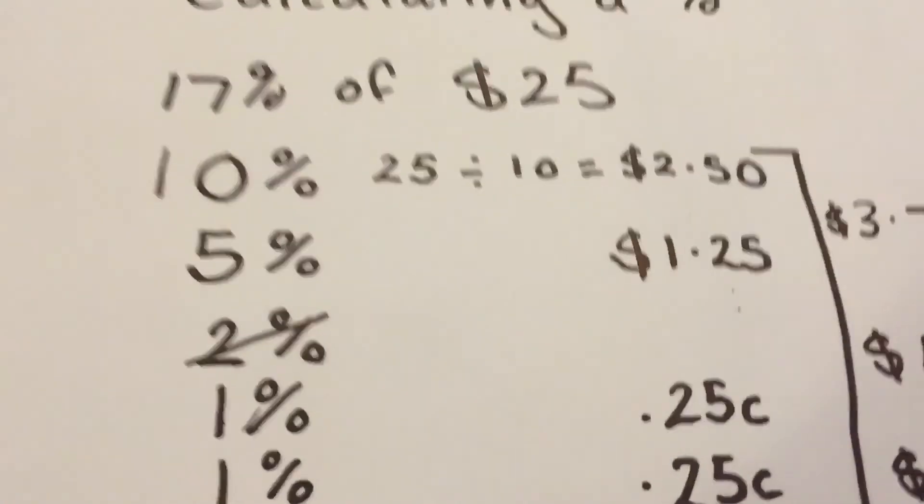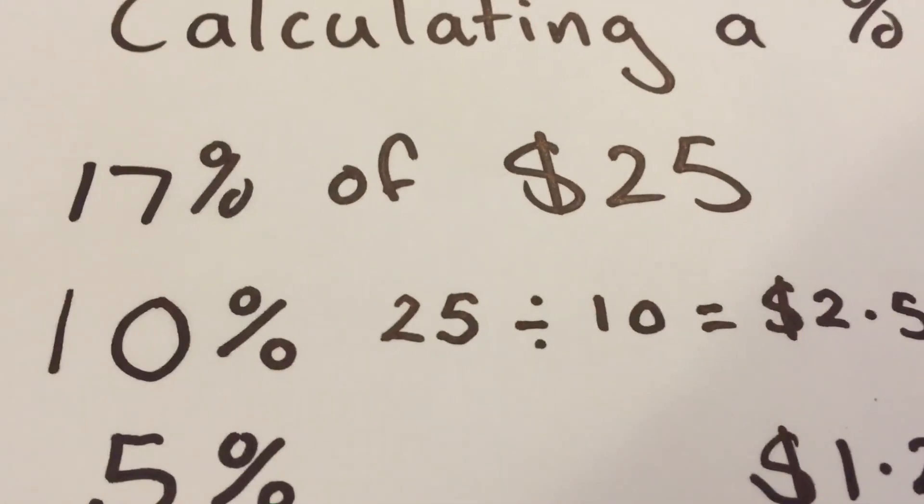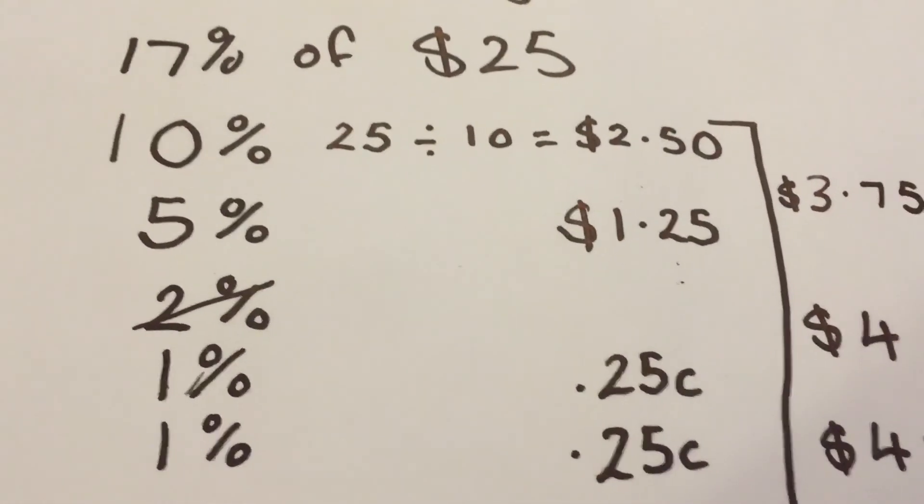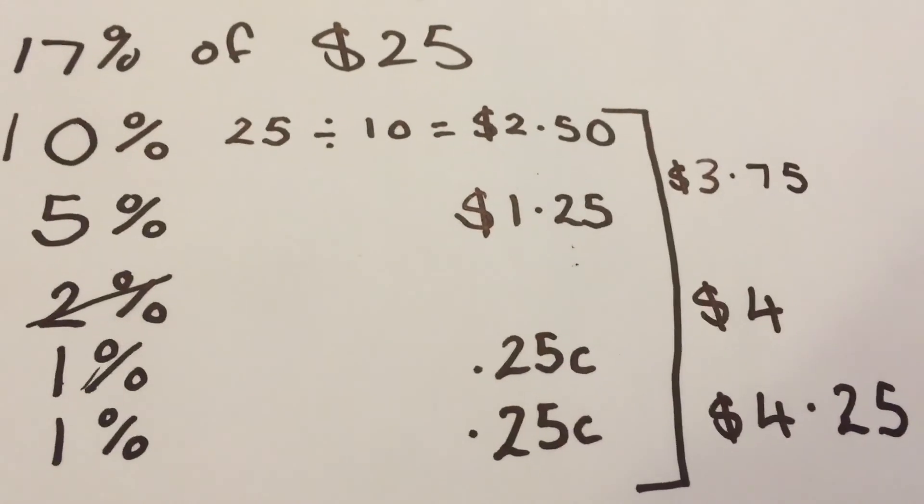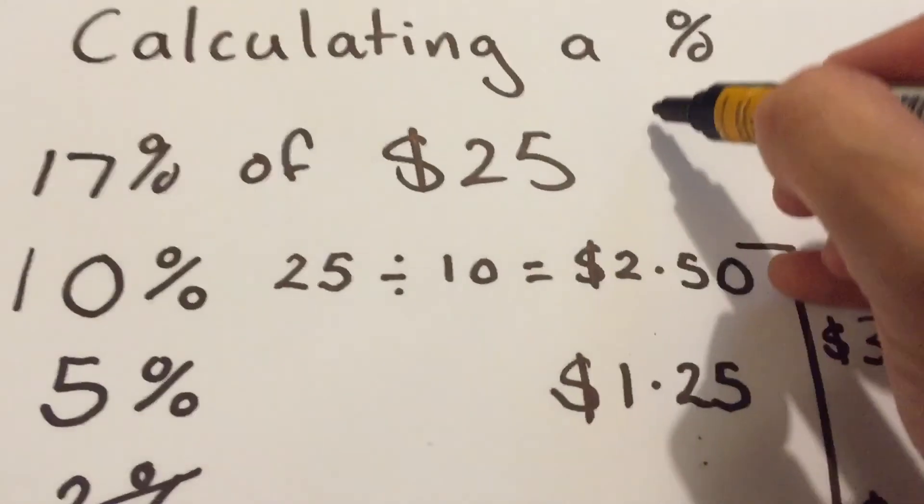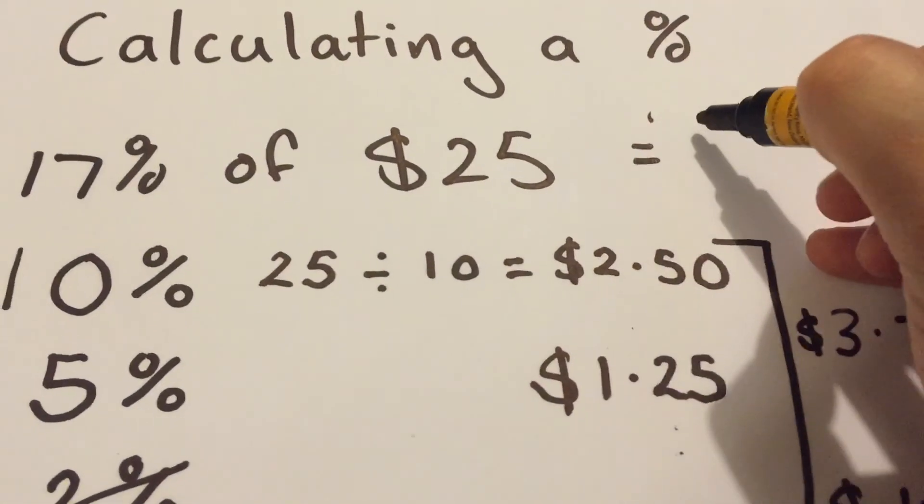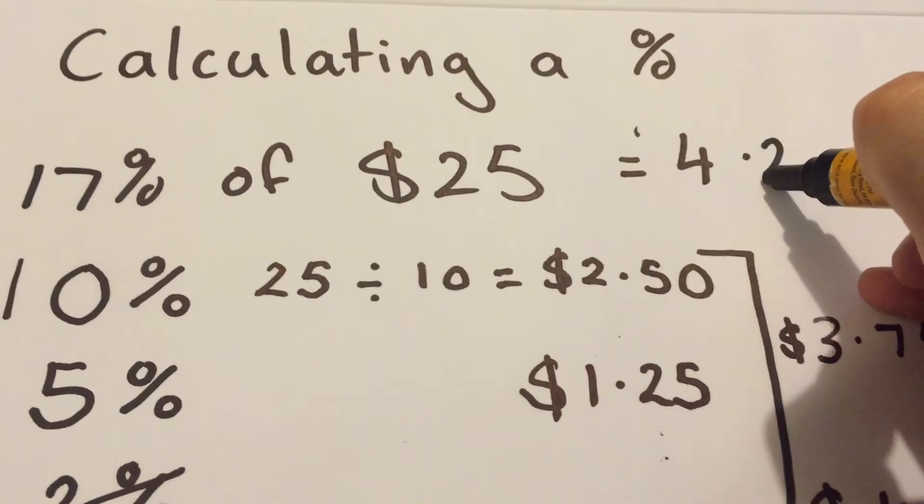Let's go back to my original question. What's 17% of $25? We just worked through that by splitting it up. And we got to this: $4.25.